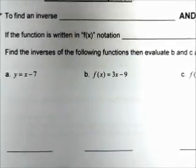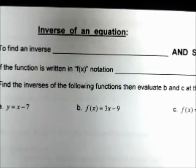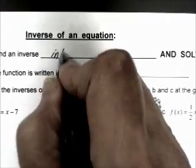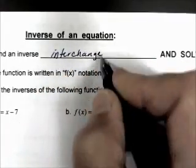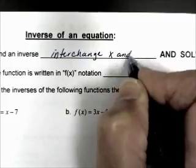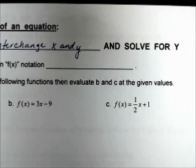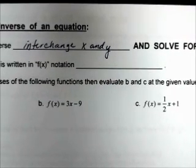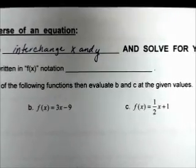When you have an equation and want to find its inverse, these are the steps: to find an inverse, you interchange x and y and solve for y. If the function is written in f of x notation, replace f of x with y first.